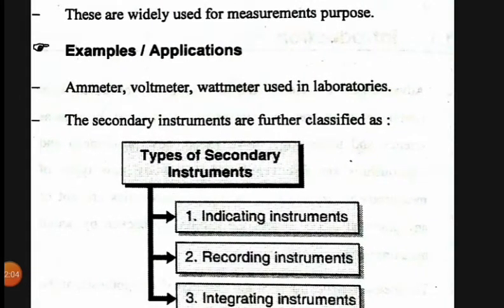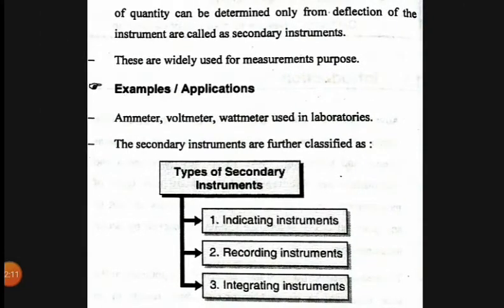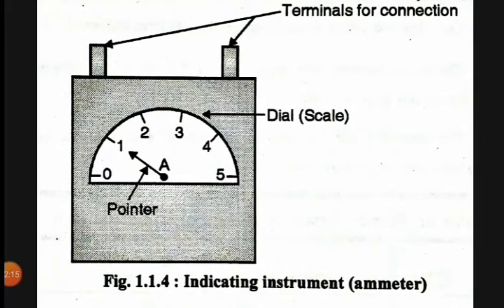Referring to the types of secondary instruments we have already seen in the classification: the first is indicating instruments, the second is recording instruments, and the third is integrating instruments. Let us see each one by one. The first one is the indicating instrument. This is the ammeter diagram which we have used in practical terms.